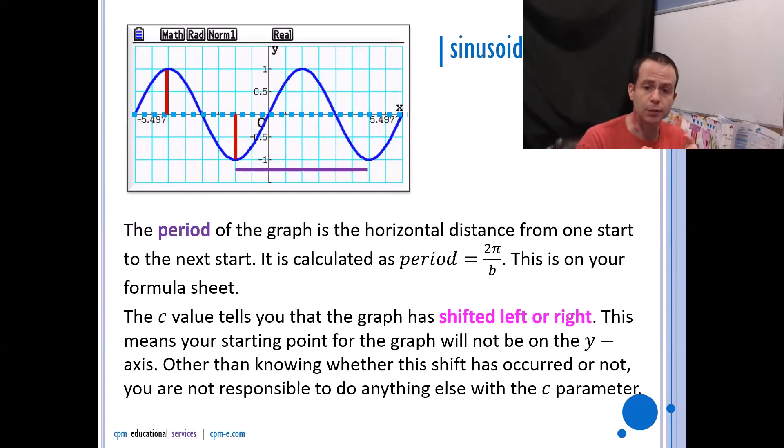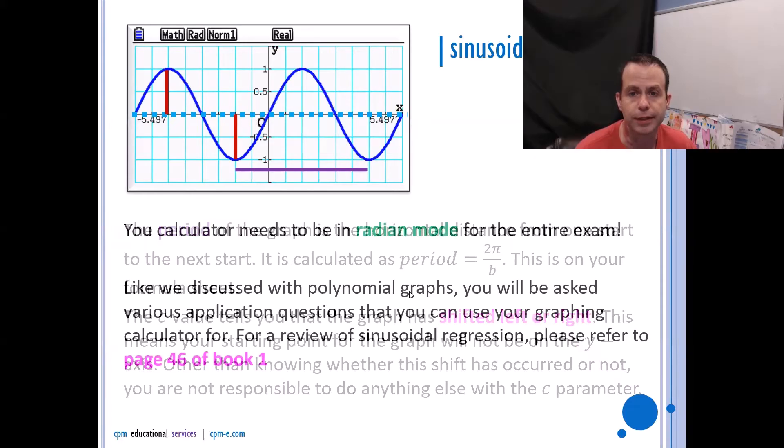The c value tells you that the graph has shifted left or right. Now depending on how keen your teacher was on showing you some of these things, they may have actually gotten you to try and put a number on c. You don't have to in Math 30-2. All you have to do is say a shift has occurred. You don't even have to say whether it's to the left or to the right. You just have to say the fact that there's a c value there means I'm not starting right at that point anymore. We're shifting it all over here or we're shifting it all over here. So other than knowing whether this shift has occurred or not, you're not responsible to do anything else with the c parameter in 30-2.